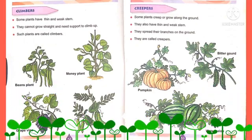Now let us revise about climbers. Some plants have a thin and weak stem. They cannot grow straight and they need support to climb up. Such plants are called climbers. Examples are money plant, bean plant, and grapevine.